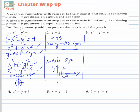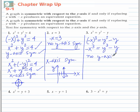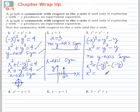Moving on to number 3. Let's replace x with negative x. Negative x cubed is negative x cubed, so we did not end up with the same equation as we started out with. So there is no y-axis symmetry. Now let's check for x-axis symmetry by replacing y with negative y. We end up with x cubed equals negative y cubed plus y. This equation is not the same as the equation we started out with, even if you multiply both sides by negative 1. So there is no x-axis symmetry.